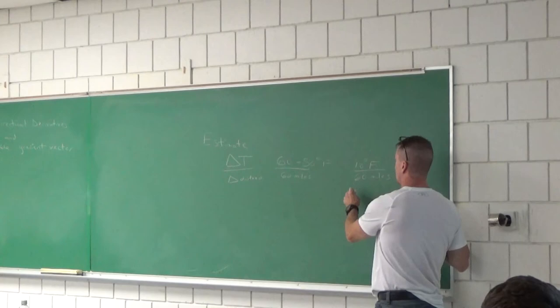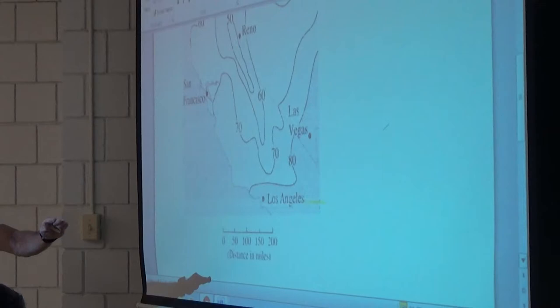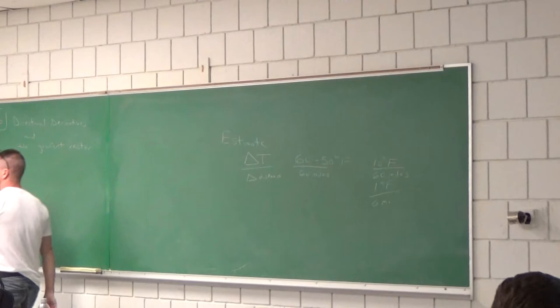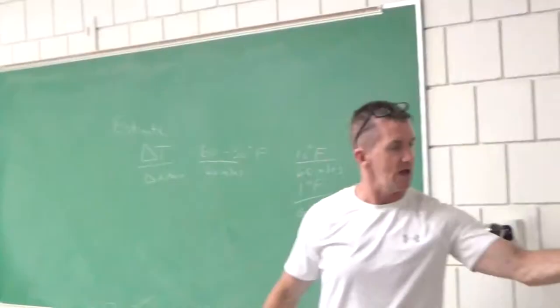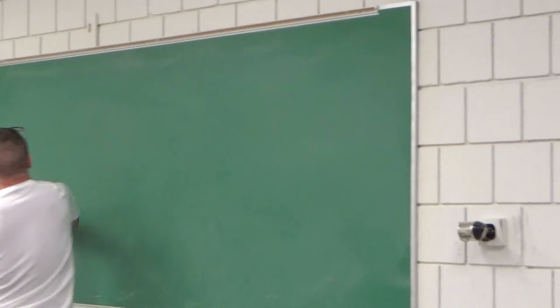Now we need a formula for this. They use a vector made up of partial derivatives. Let's say you had a function of x and y — I'll use a simple x² + y². The directional derivative will equal some vector made up of the partial derivatives, and all we do is take a dot product with some directional vector. The partial of f with respect to x here is 2x.